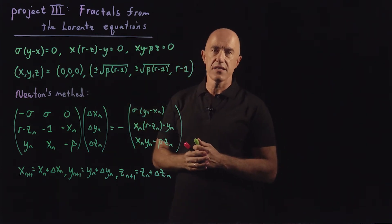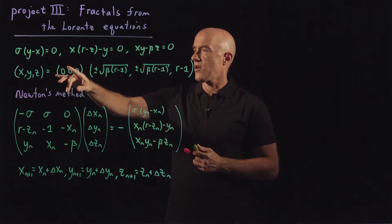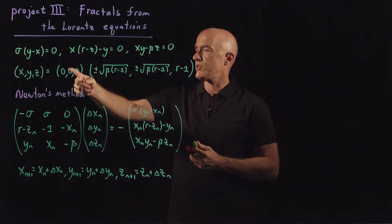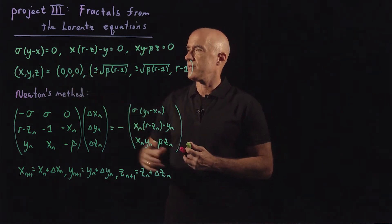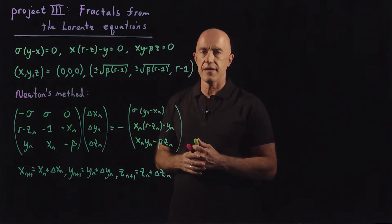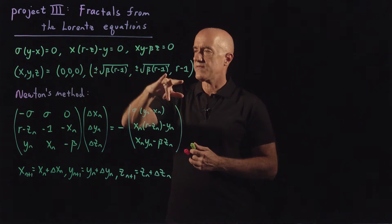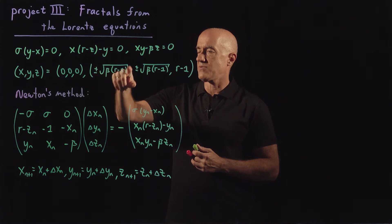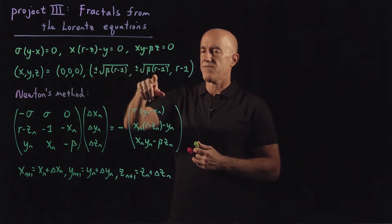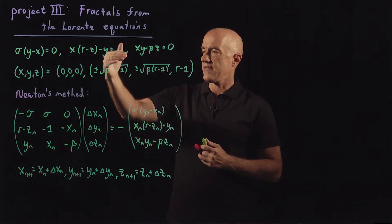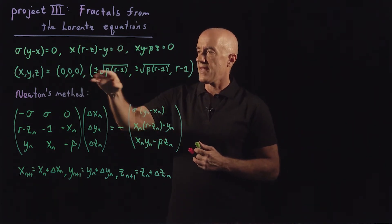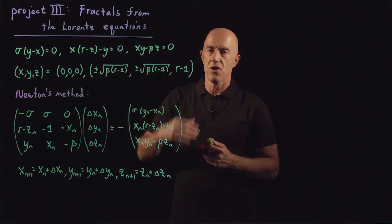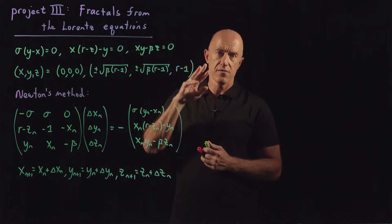There's actually analytical solution to these equations. There are three fixed points, three solutions to this equation. The origin, zero, zero, zero, is one of the solutions. You can readily see that. The other two solutions have this form. One is the plus root, so square root of beta times r minus 1 for x, the same value for y, and r minus 1 for z. And the third solution is the negative root, negative square root of beta r minus 1 for x, the same for y, and r minus 1 for z. So there are three solutions.